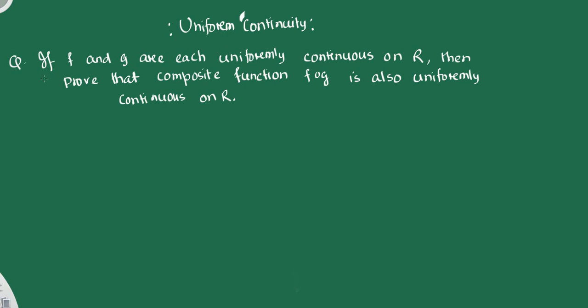Question 2. This is most probably a seasonal exam question. Question 2 is: if f and z are each uniformly continuous functions on R, then prove that the composite function f dot z — that is, the composition of two functions — is also uniformly continuous on R. So a function keeps the property of being uniformly continuous on R.